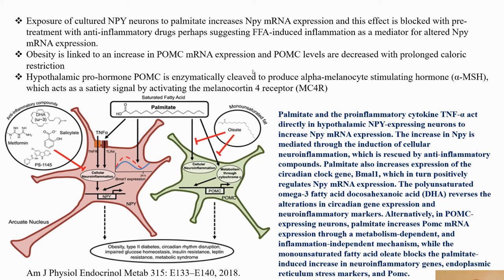POMC is the anorexigenic system — contrarian to the NPY axis. The hypothalamic pro-hormone POMC is enzymatically cleaved to produce enkephalins and endorphins — that's why it's pro-opio-melanocortin — but also melanocortins and alpha-melanocyte-stimulating hormone (alpha-MSH). Alpha-MSH acts as a satiety signal by activating the melanocortin-4 receptor. The full regulation in these POMC neurons is mediated by the synthesis and secretion of alpha-MSH.